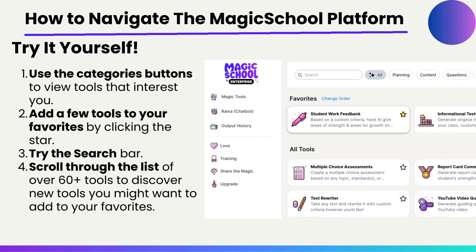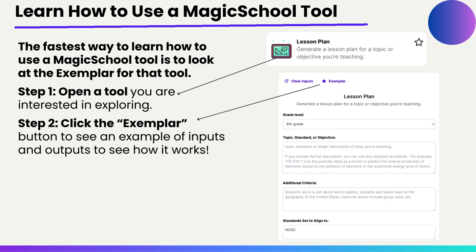This is a self-paced overview of Magic School AI, so hopefully you're logging in and clicking around and trying this for yourself. You can use the categories button to view tools that interest you, add tools to your favorites, try the search bar, and scroll through the list to see what tools are available. A fantastic way to figure out what a tool does is by clicking on it — for example, if I click on the lesson plan tool, I can click on the exemplar to see what an output would look like.